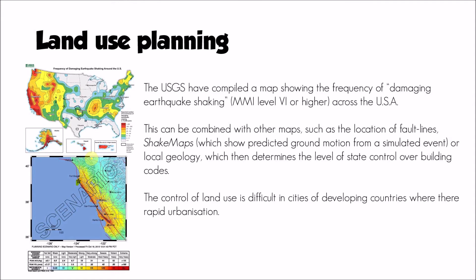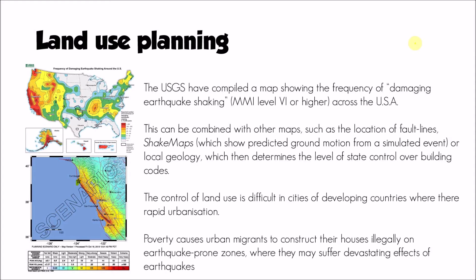While land use planning can help ensure buildings aren't constructed in earthquake-prone areas, it is really difficult to achieve in developing countries, particularly where there are rapid rates of urbanization. Poverty drives rapid rural-to-urban migration, happening so quickly that local authorities can't control house construction. Urban sprawl happens rapidly, and migrants often construct houses — potentially illegally in squatter settlements — on unsuitable land or using construction techniques that don't meet required planning standards. Land use planning in developing countries is often limited by poor governance.